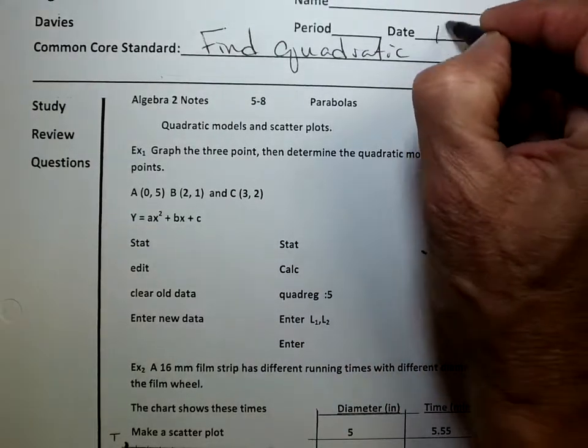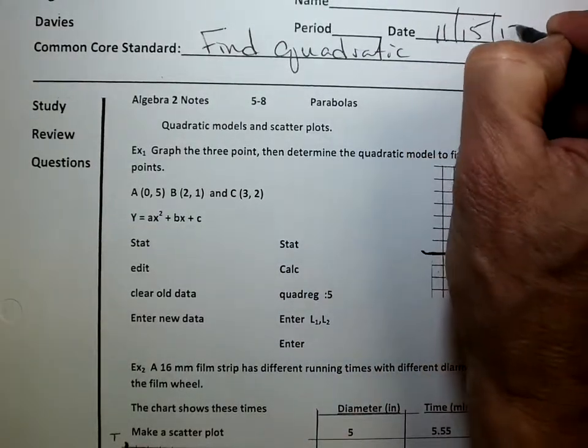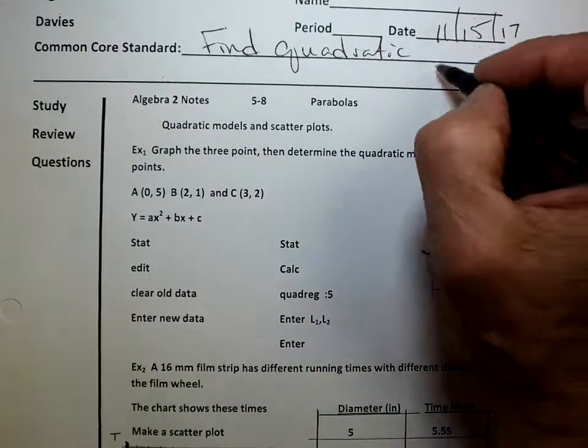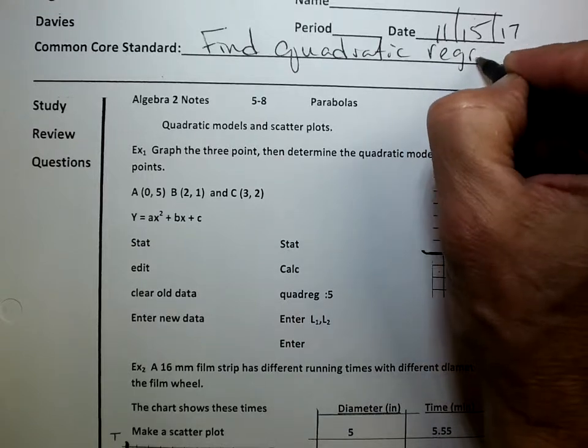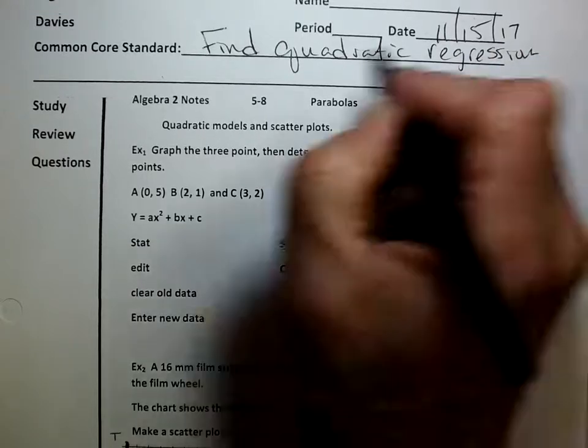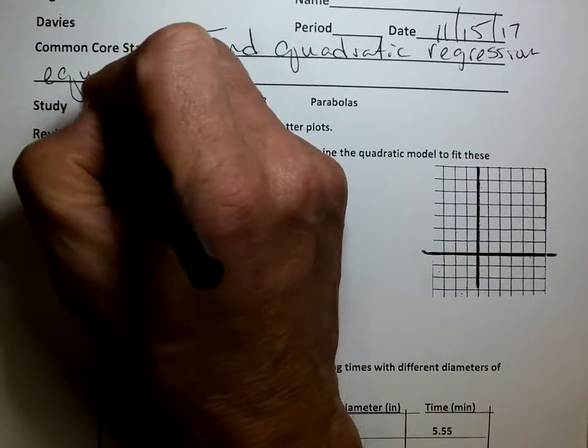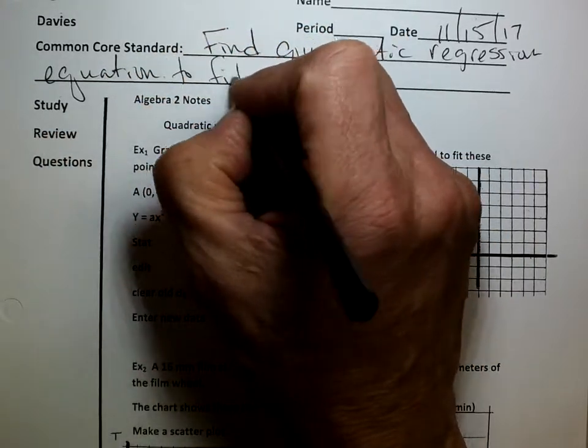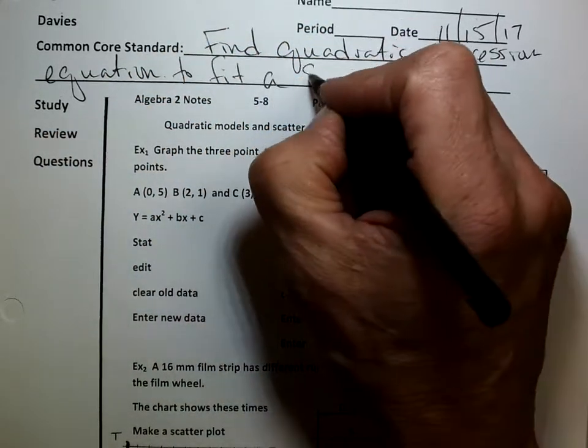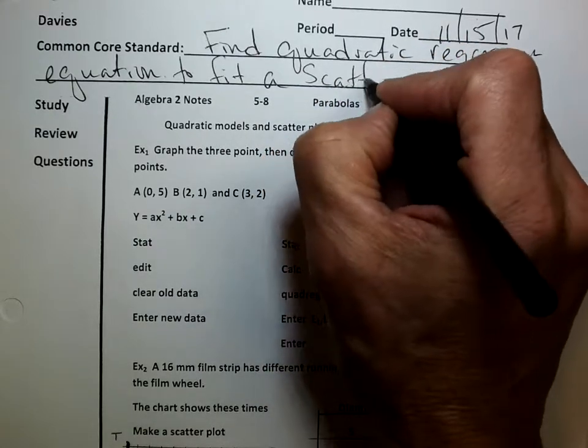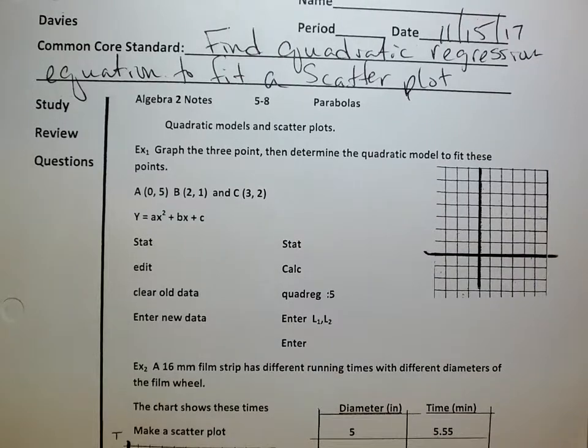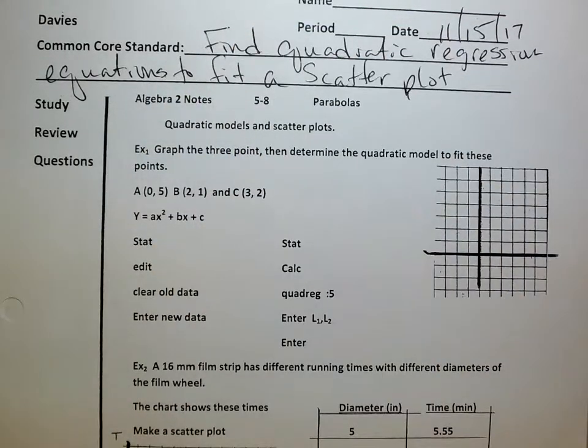Today's date is 11/15/17. We're going to find quadratic regression equations to fit a scatter plot.